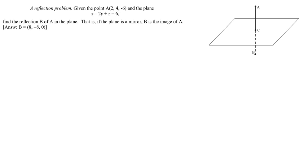We want to find the point B, which is the reflection of A through the plane. Now we're going to do this by finding the equation of the line that starts at A and moves in the normal direction.